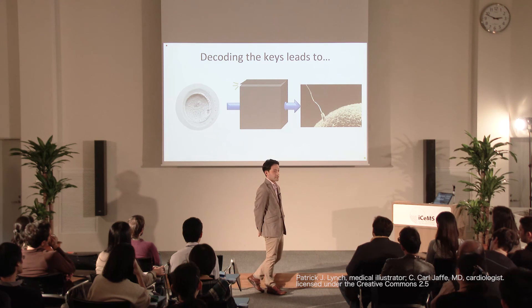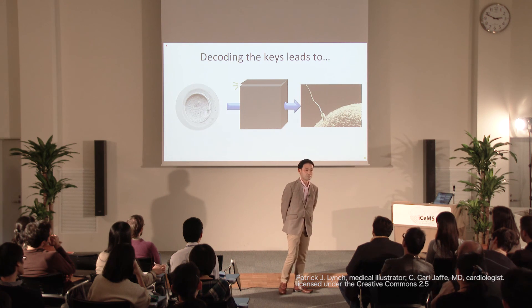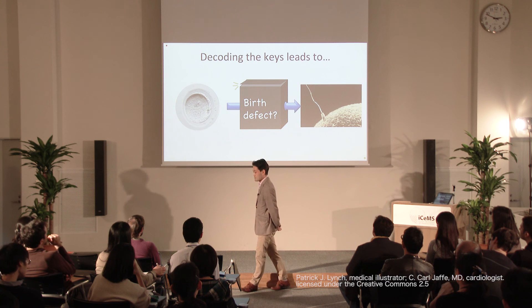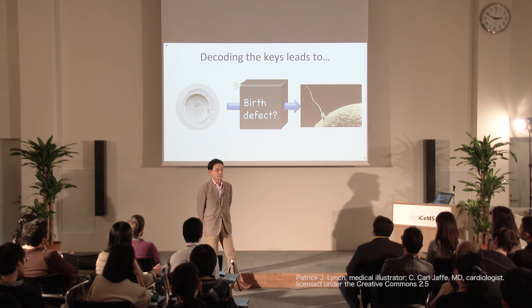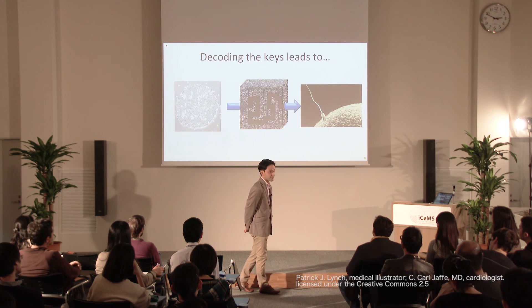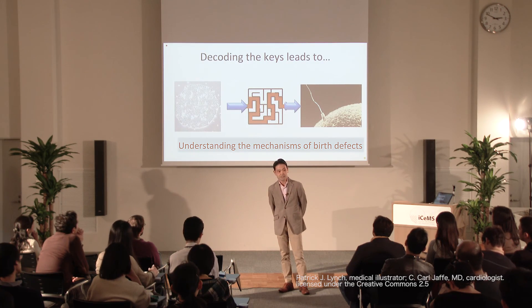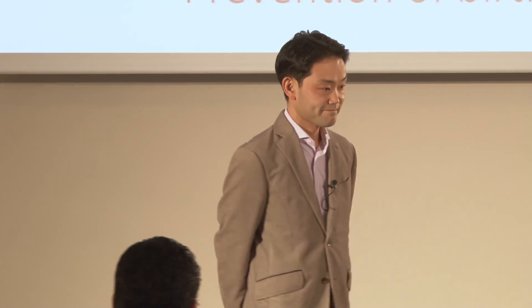To summarize, we are trying to decode this black box — which is now slightly open. This black box hides the reasons for birth defects, and we are trying to open it through the use of human iPS cells. Once we can decode this, we may be able to study the mechanisms of birth defects, and someday provide prevention or even treatment. That is the end of my talk. Thank you so much.